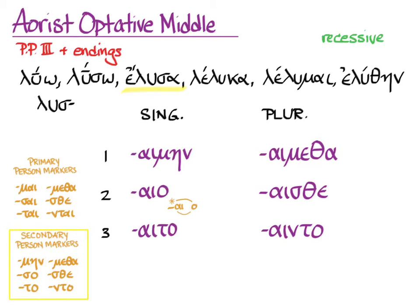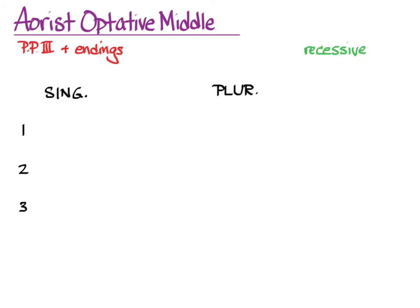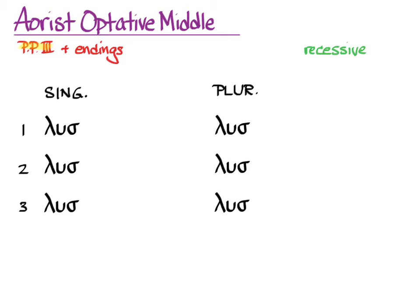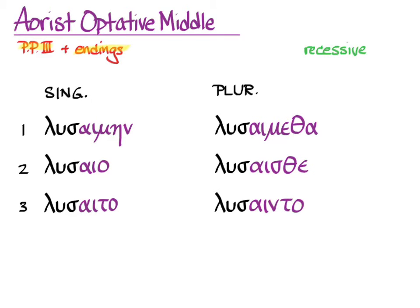Accent is recessive, and it has simple aspect. No default translation since you have to know your context first. So putting those endings on luō, we need that un-augmented stem from the third principal part, and adding the endings with recessive accent, we get: luσαίμην, luσαίο, luσαίτο, luσαίμεθα, luσαίσθε, luσαίντο.